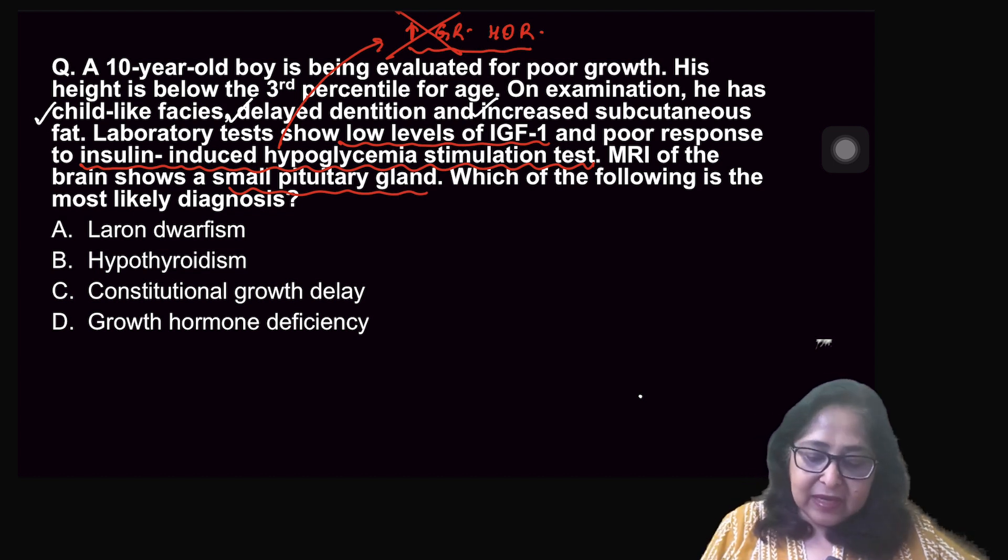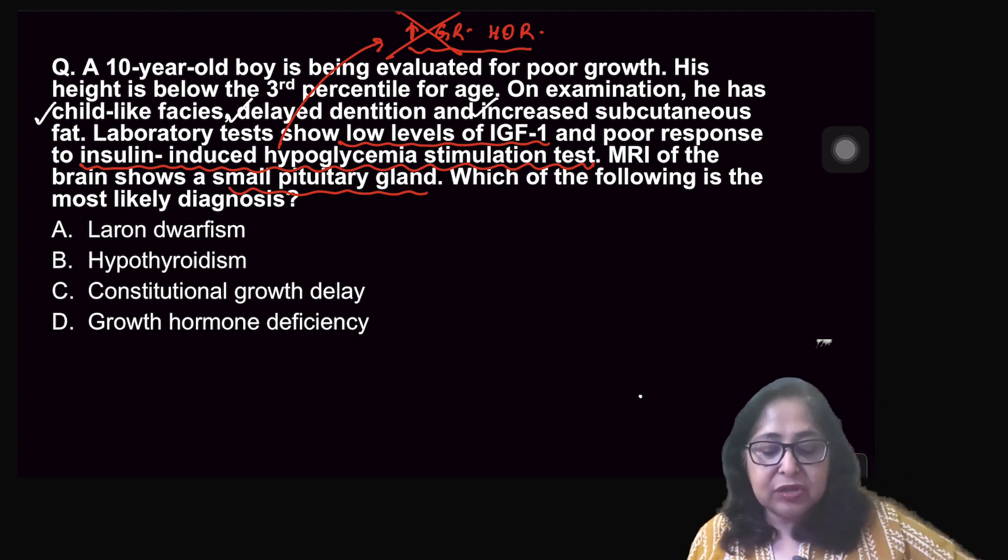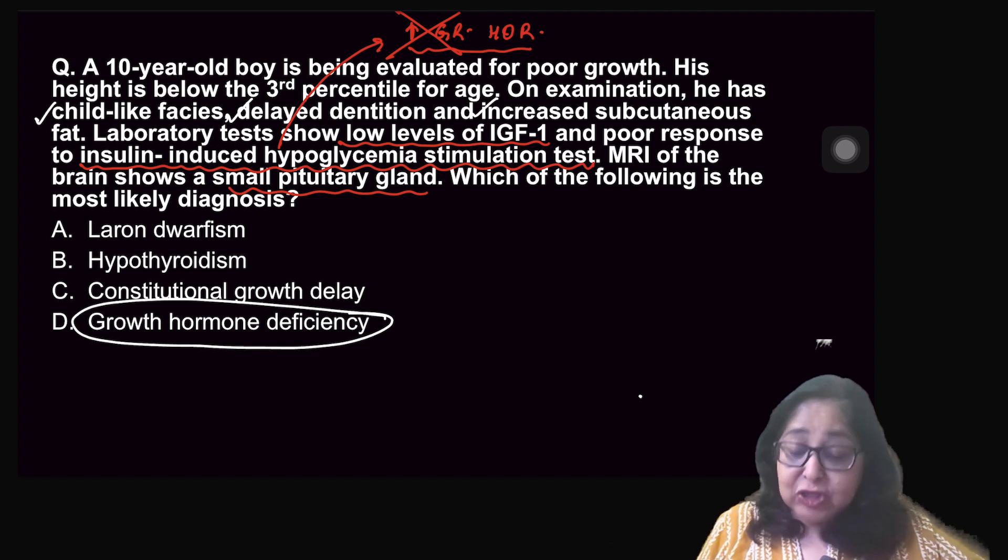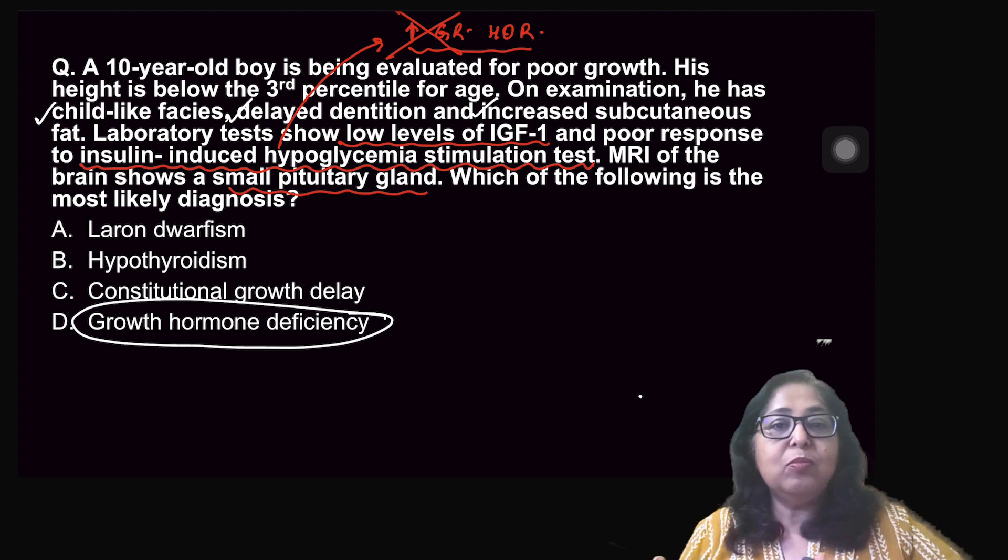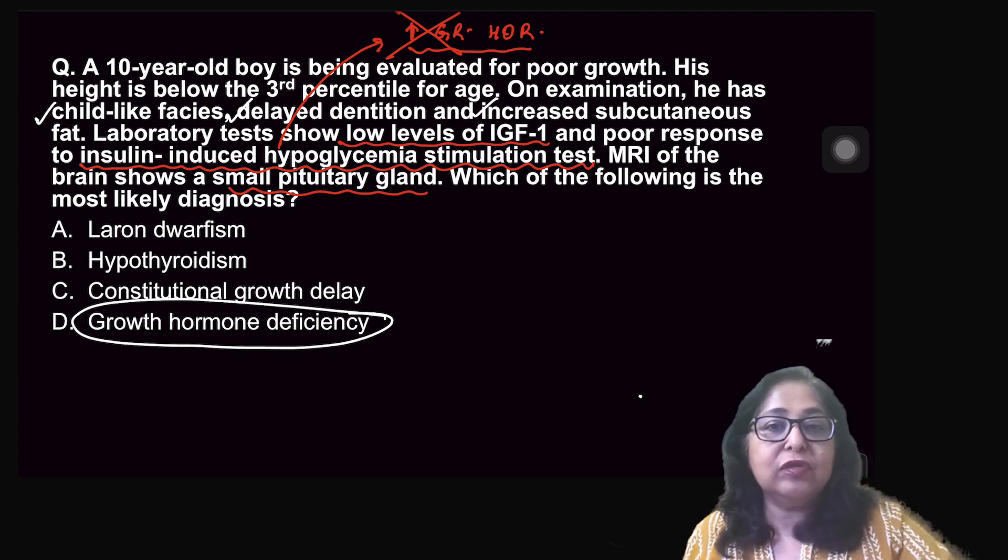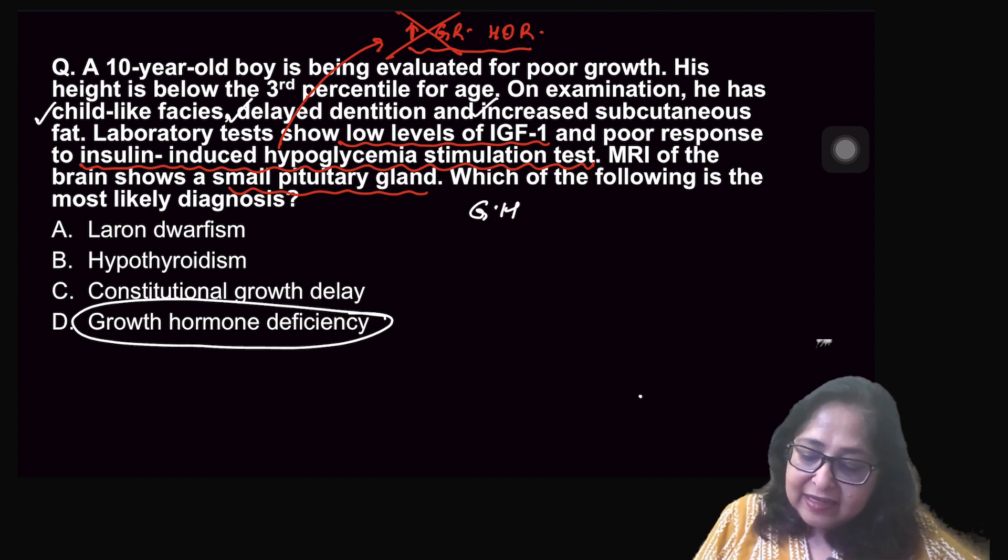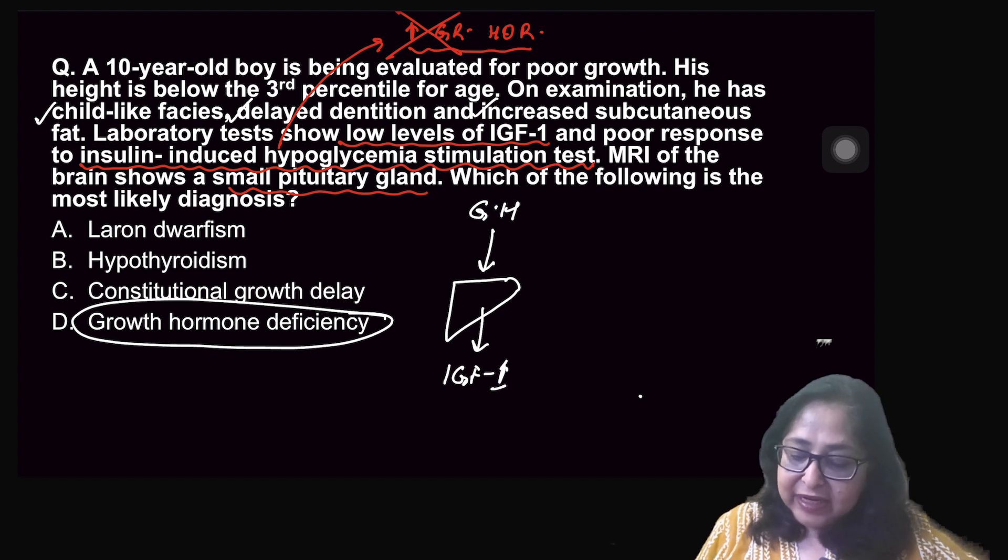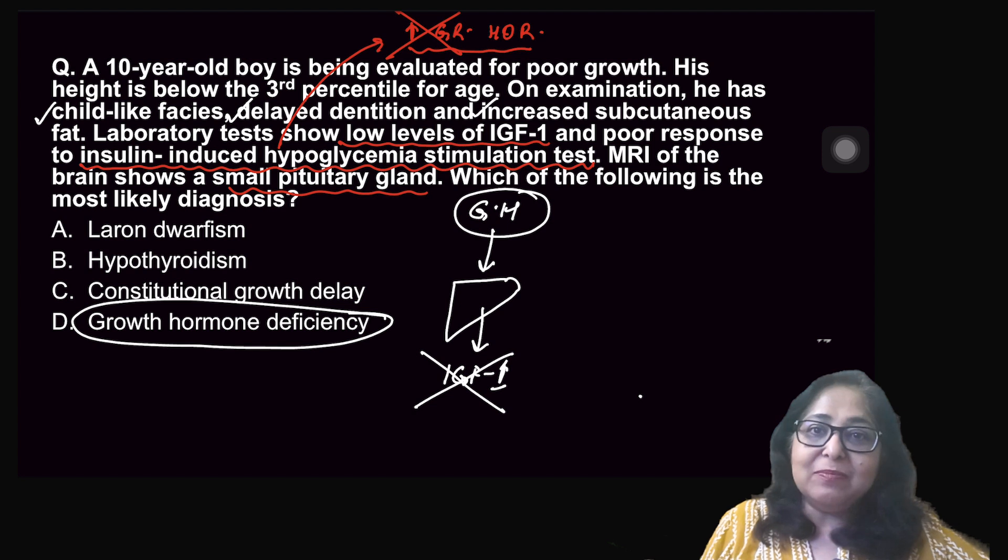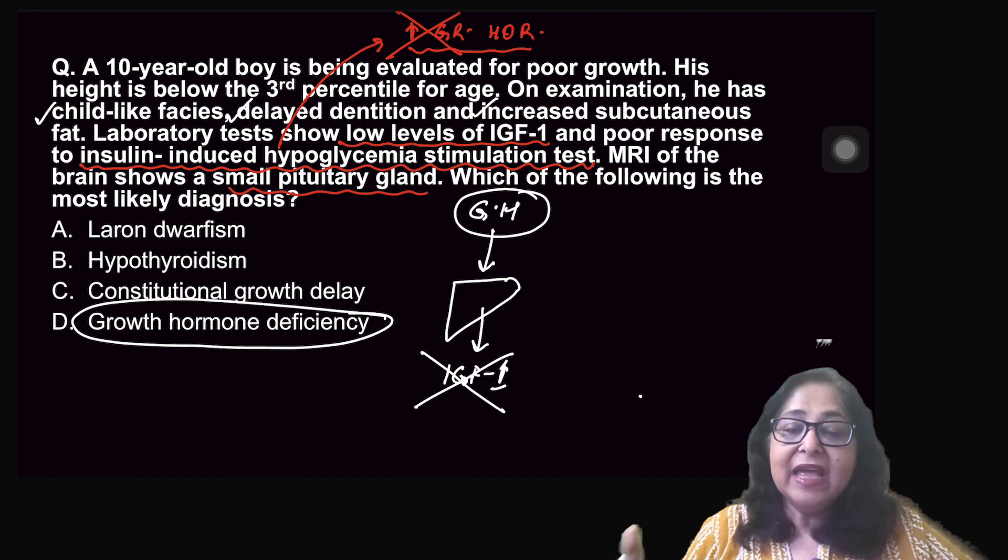MRI of the brain shows a very small pituitary gland. Which of the following is the most likely diagnosis? Is it Laron dwarfism, hypothyroidism, constitutional growth delay or growth hormone deficiency? This is pointing more towards a growth hormone deficiency, especially the small pituitary gland. What is Laron dwarfism? Laron dwarfism is a growth hormone insensitivity. That means growth hormone is not able to act on its receptors. There is a mutation of the gene which is responsible for the growth hormone receptor. Normally, growth hormone acts on the liver and liver produces IGF-1. So if there is a growth hormone insensitivity, we expect no IGF-1 to be produced. But what will happen to the growth hormone levels? Growth hormone levels may be normal or even high.